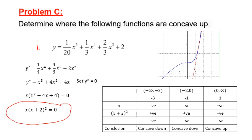Let's also note that there was a change from concave down to concave up. Looking at the diagram, the function is concave down up to zero and then concave up after zero. That means there is a point of inflection at the junction between these two, which is at (0, 2). That's where the change of concavity occurs, and that's why the point of inflection is at (0, 2).